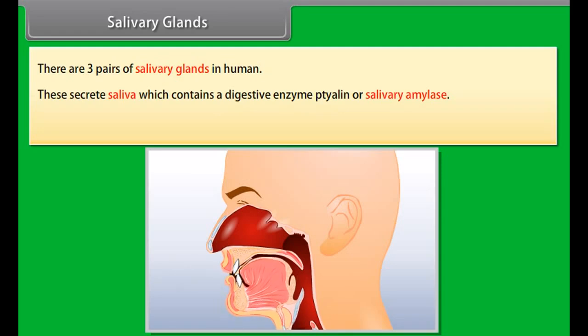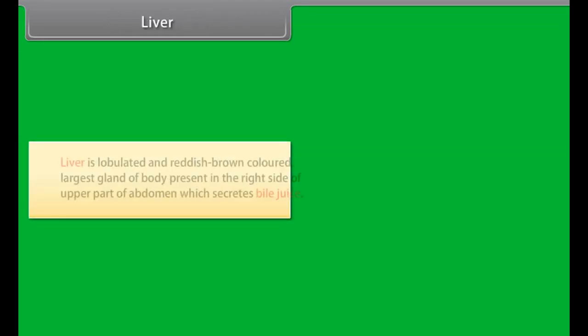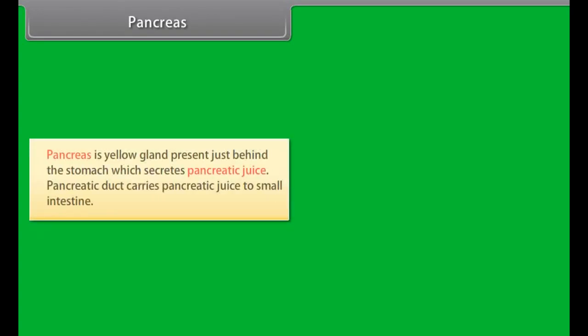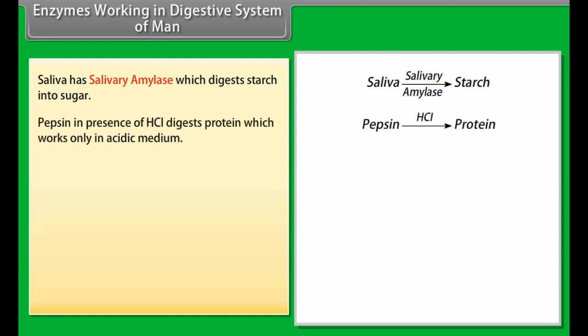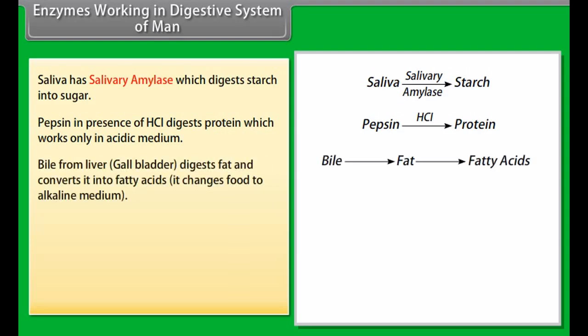The large intestine is shorter and wider than the small intestine, divided into the colon and rectum. It helps in formation and temporary storage of feces. The colon is the last part of the digestive system in most vertebrates and extracts water and salt from solid wastes before they are eliminated. The rectum is the last 6 to 8 inches of the large intestine and stores solid waste until it leaves the body through the anus.